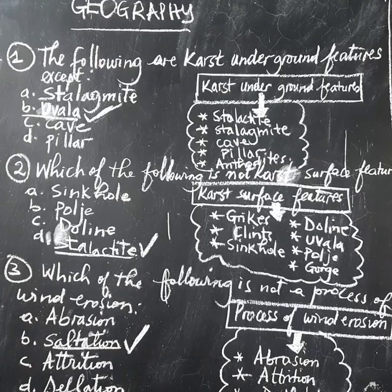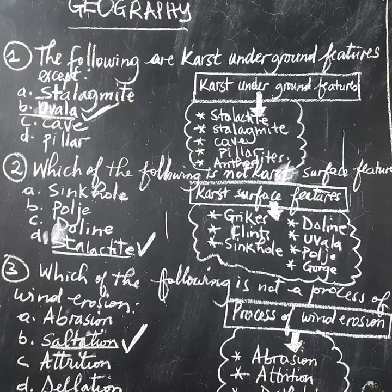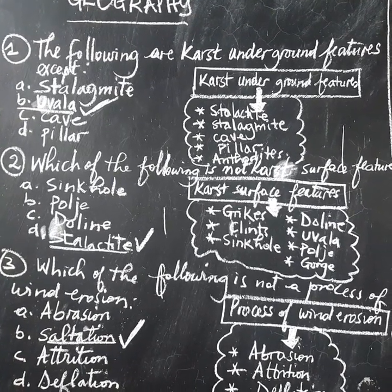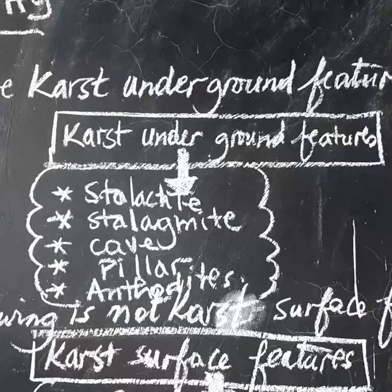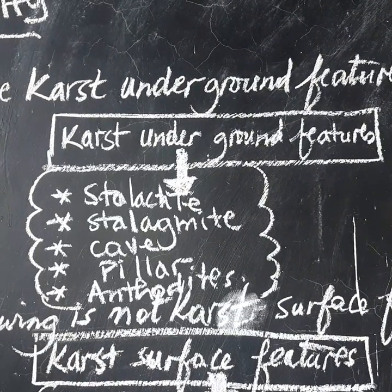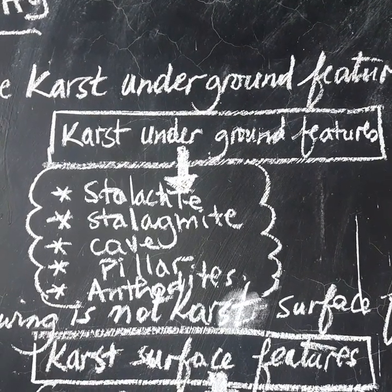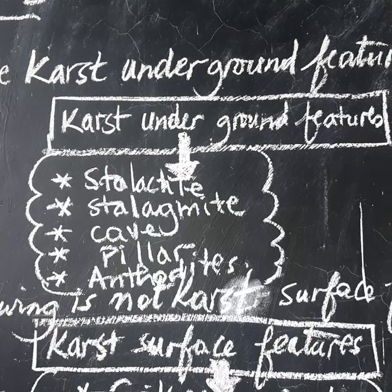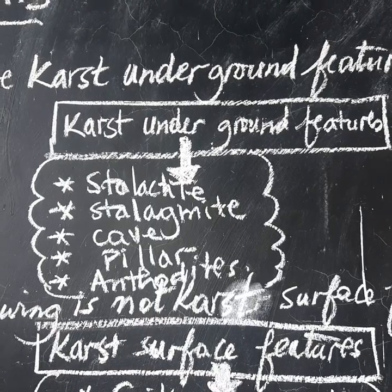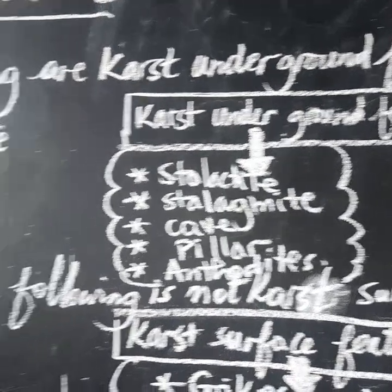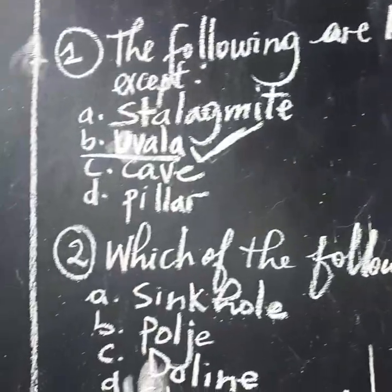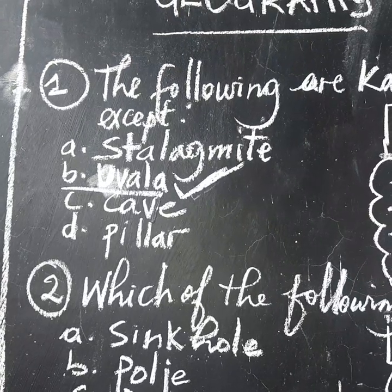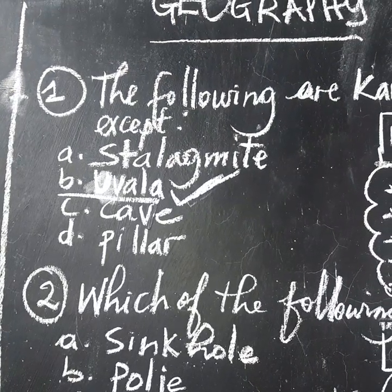Because when you look at the diagram aside, we have underground features. The underground features we have are: stalactite, stalagmite, cave, pillar, and stalactite variants. So therefore, we don't have Uvara as an underground feature.